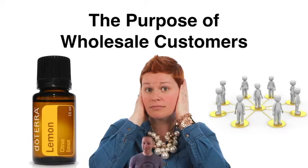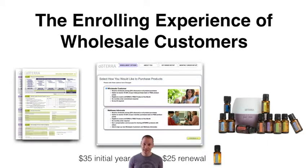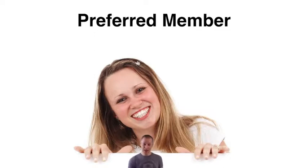They just don't want to hear about it. So they can join, get wholesale prices, participate in the loyalty rewards, and get great prices. If they do know someone that wants to join, they can refer that person to their enroller who can sign them up. The enrolling experience is exactly the same — there's a different radio button or form, but the price is the same: $35 initial fee for the first year, $25 renewal fee, and they get a free peppermint when they renew. All the kits are exactly the same. There used to be a preferred member account, but that has since gone away.